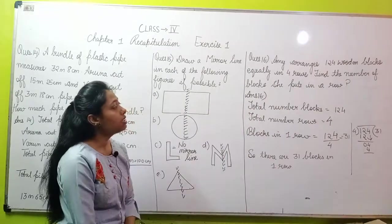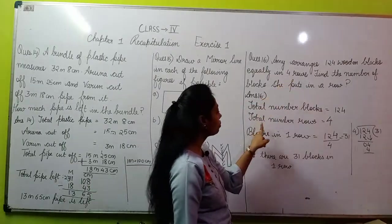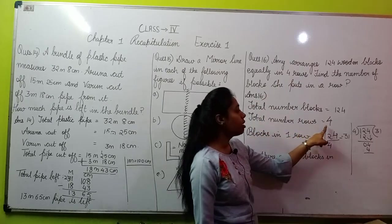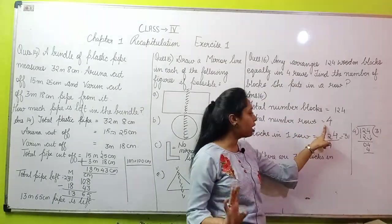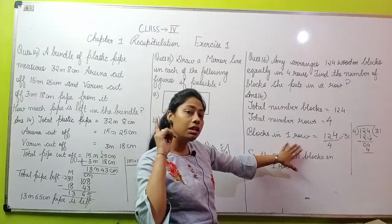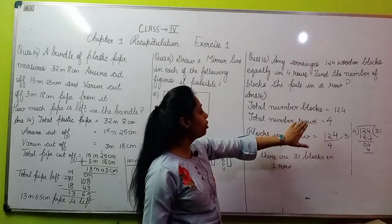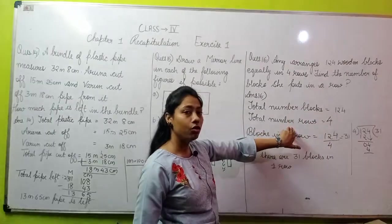Total number of blocks is 124. From this, Amy has to make how many rows? 4 rows. Total number of rows is 4. Blocks in one row - how many blocks in 1 row? This will be found when we divide the total number of blocks by the total number of rows.